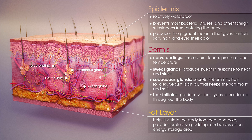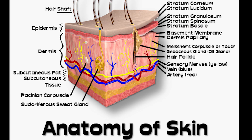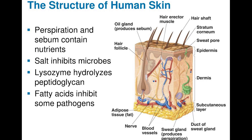The dermis is tightly connected to the epidermis through a basement membrane and is structurally divided into two areas: a superficial area adjacent to the epidermis called the papillary region, and a deep, thicker area known as the reticular region. The papillary region is composed of loose areolar connective tissue, named for its finger-like projections called papillae that extend toward the epidermis. The papillae provide a bumpy surface that interdigitates with the epidermis, strengthening the connection between the two skin layers.